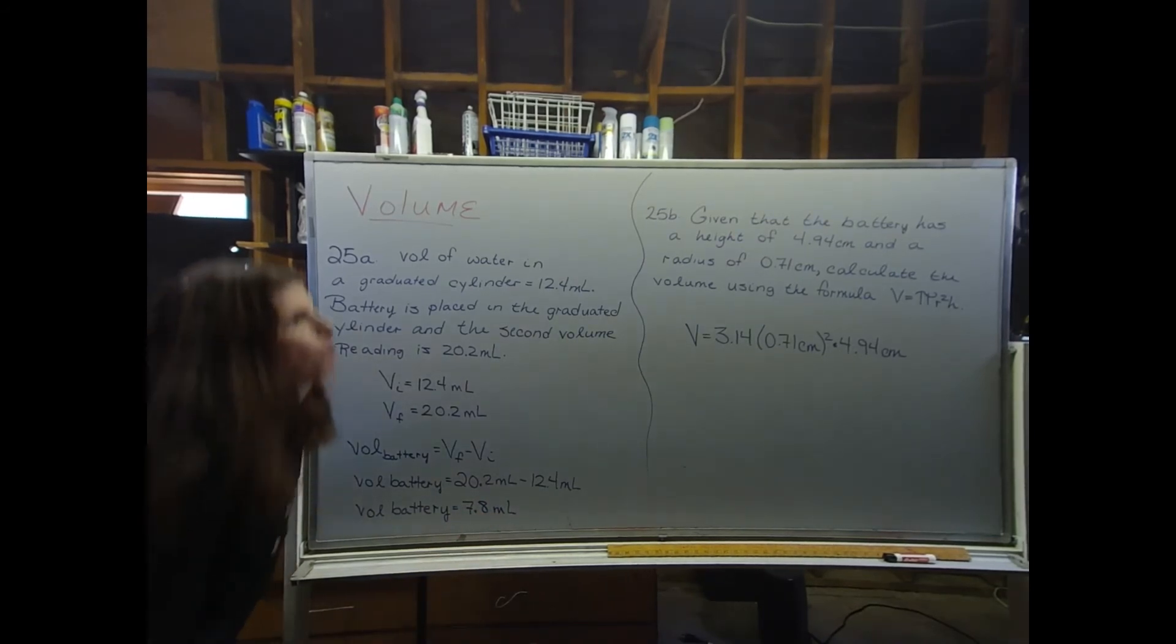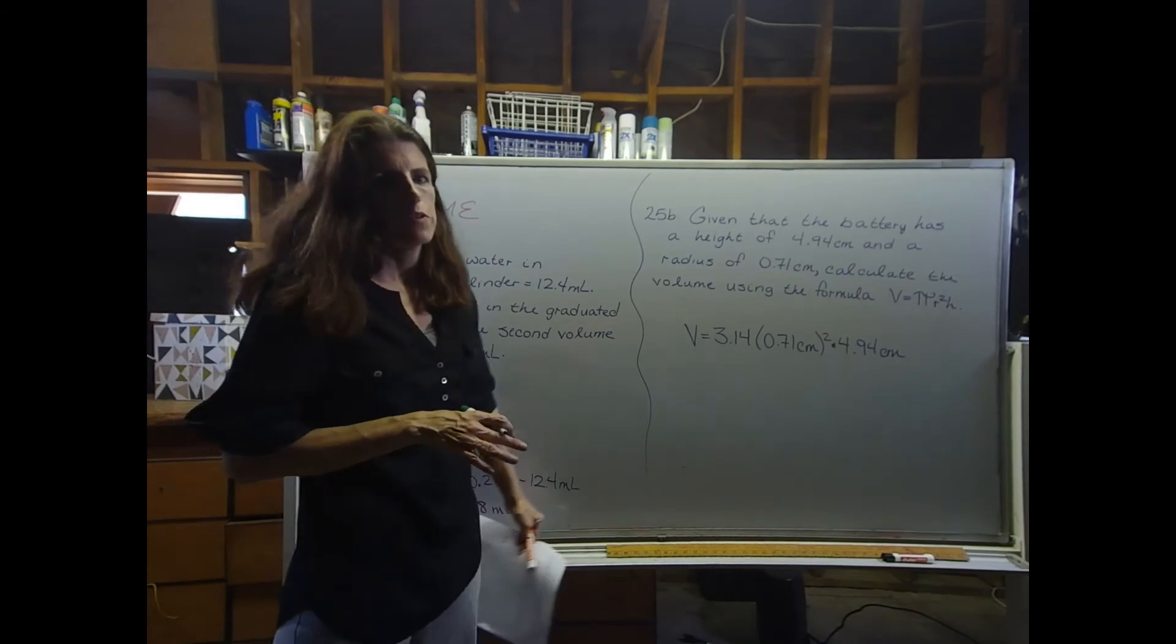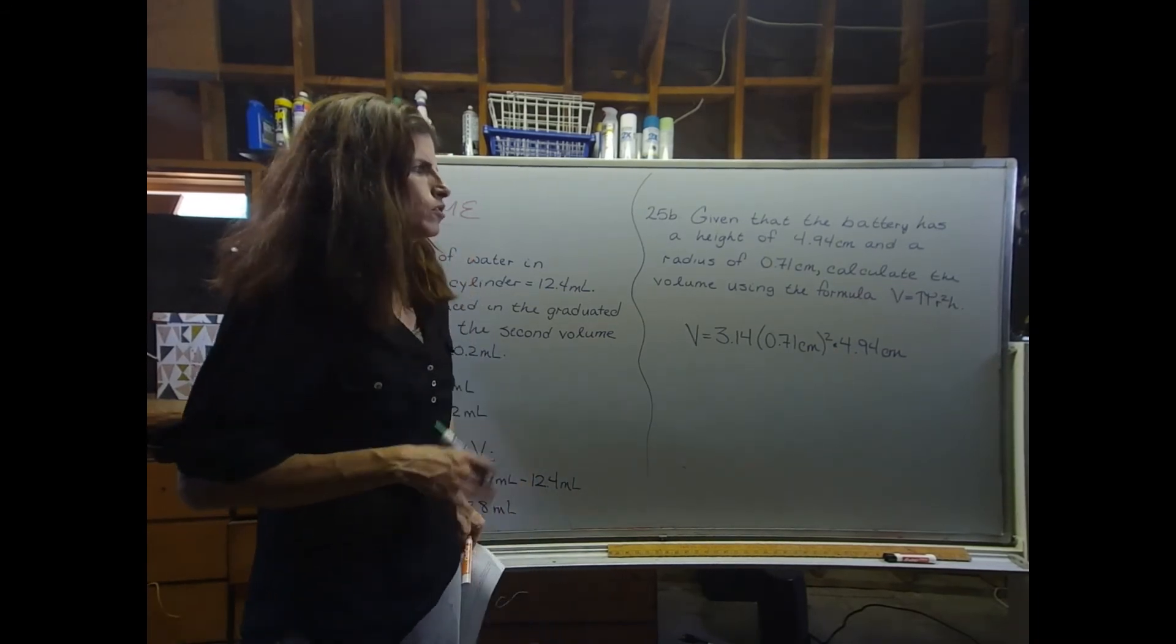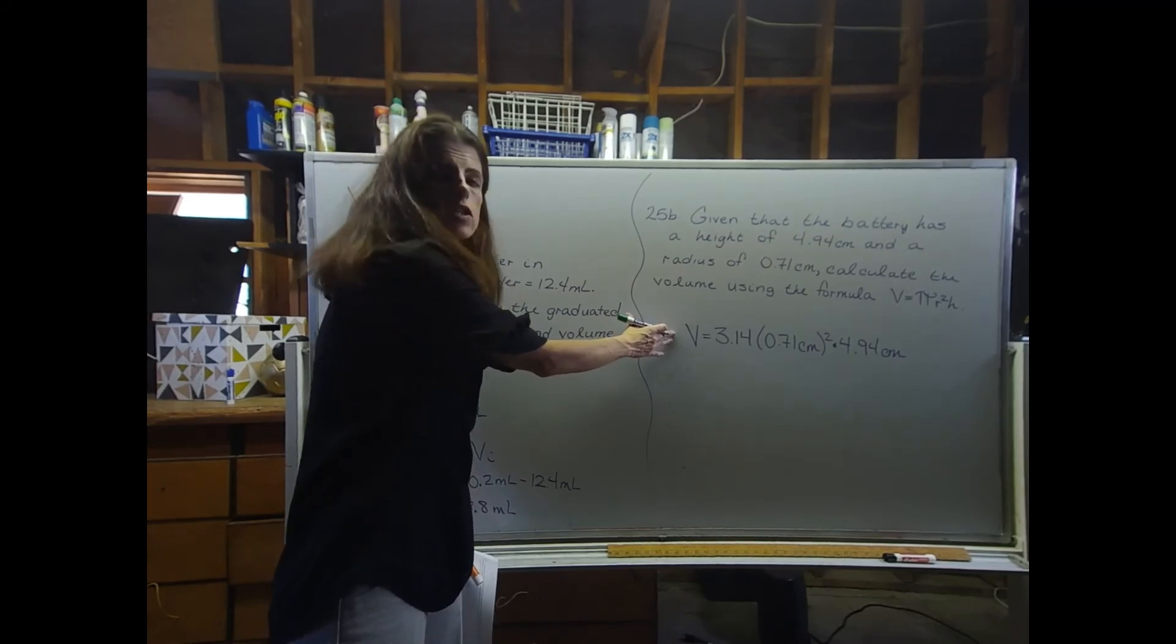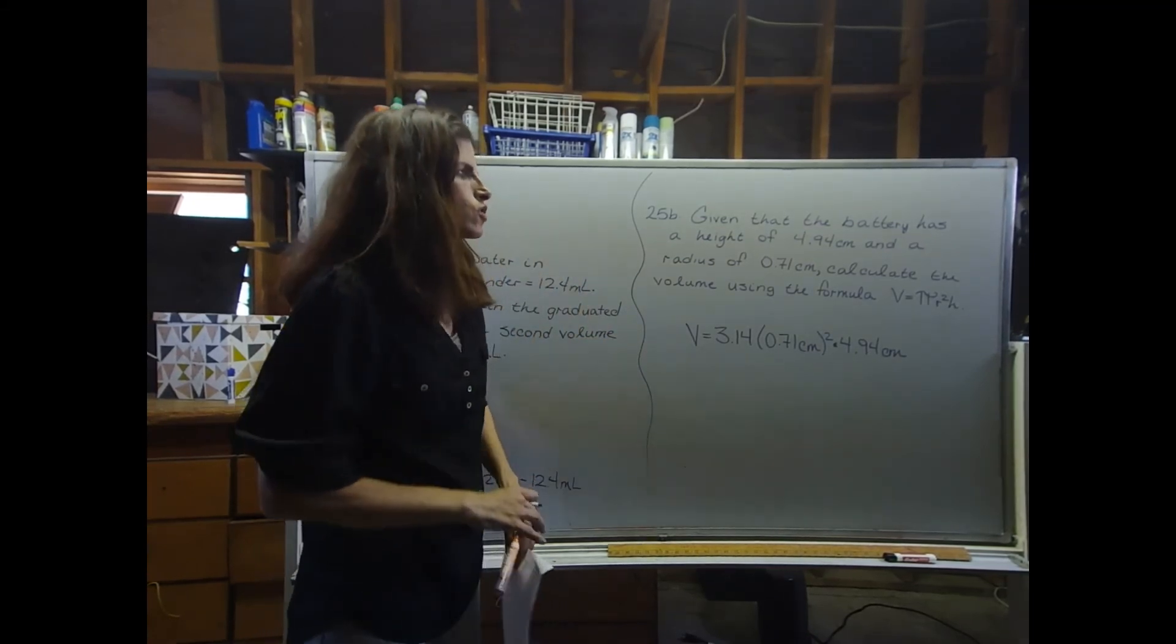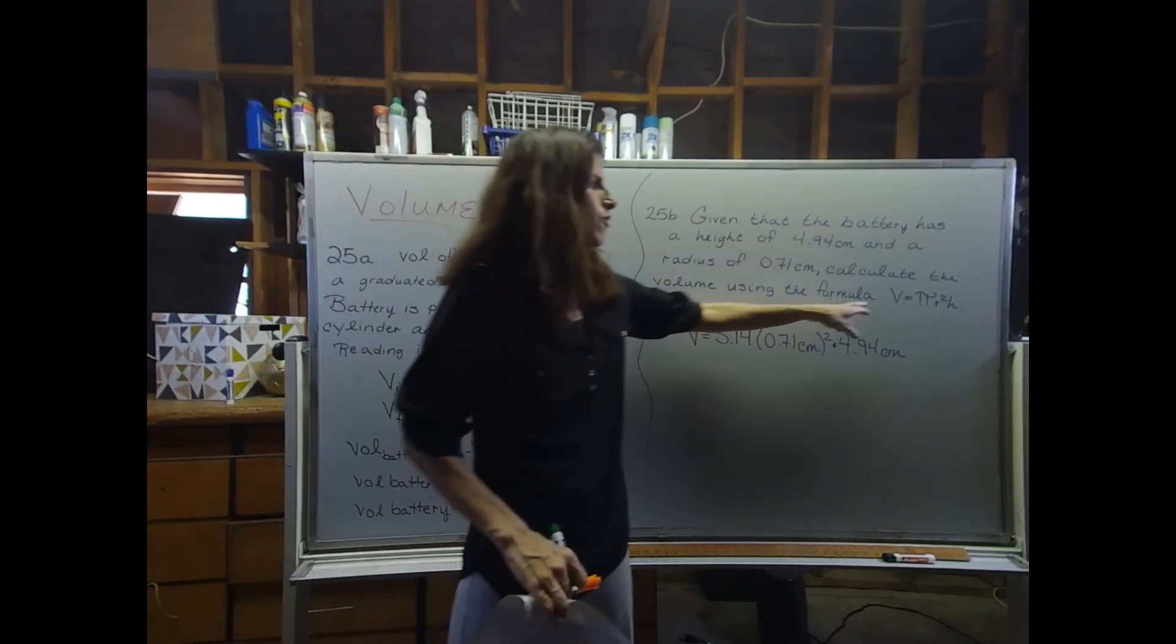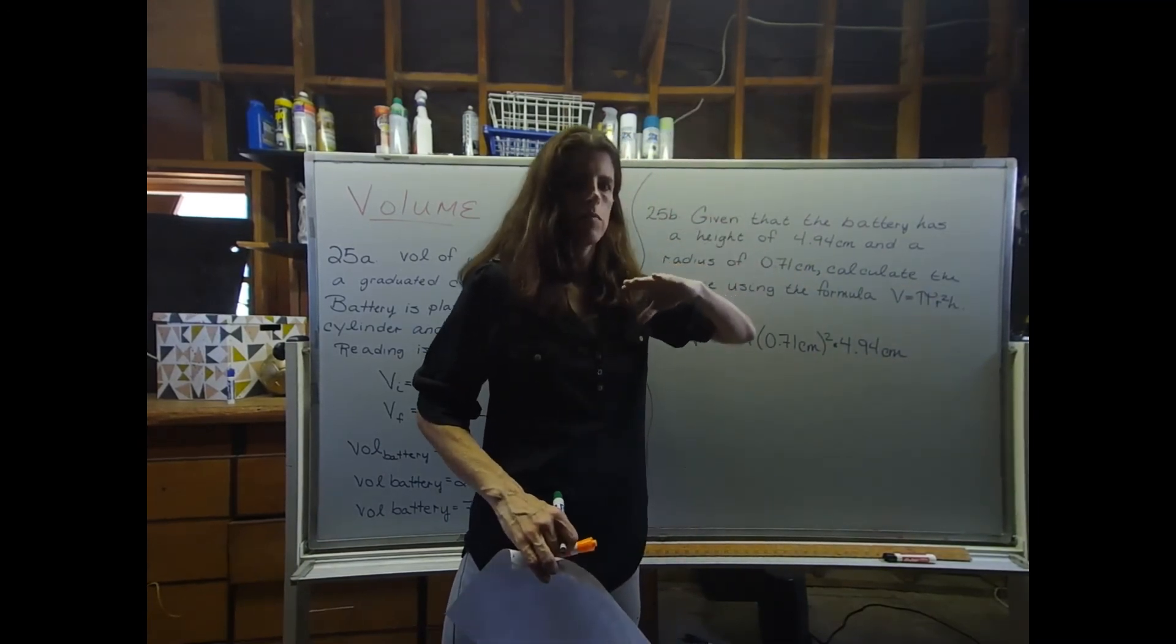In part B, since the battery is a cylinder, almost a cylinder, we can use the equation for the volume of a cylinder. So it's very similar to the volume of a circle, except you also have the height dimension.